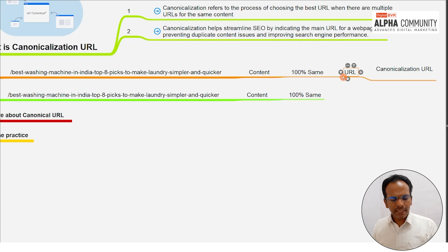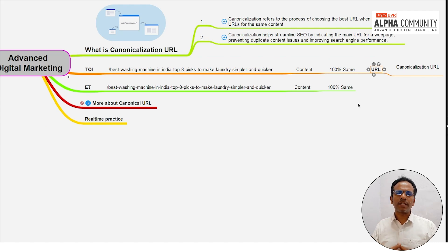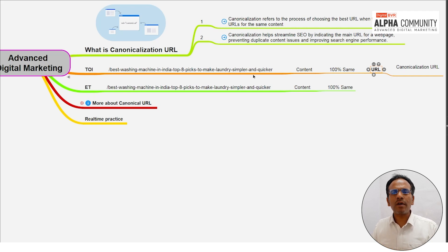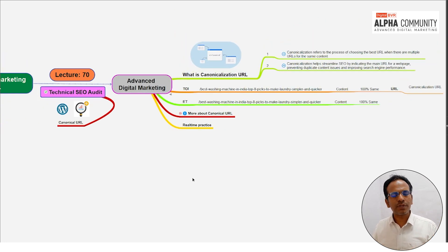By setting the canonical URL, you tell the search engine: this is my original content. Even if other websites report or copy the content, you define through canonicalization which URL is the original. This concept also connects to on-page SEO.